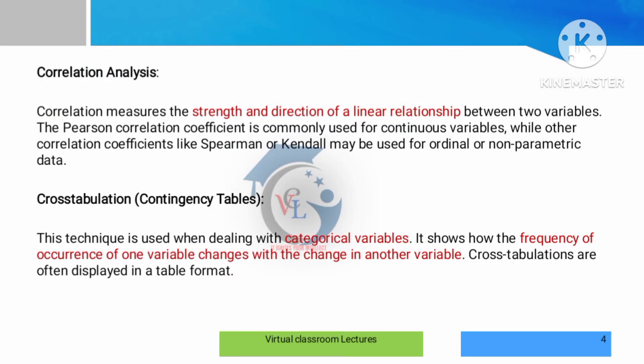The first technique is correlation analysis. Correlation analysis uses a formula involving mean value and standard deviation — in other words, correlation variance. Correlation measures the strength and direction of a linear relationship between two variables. It presents a linear relationship between the two trend variables.